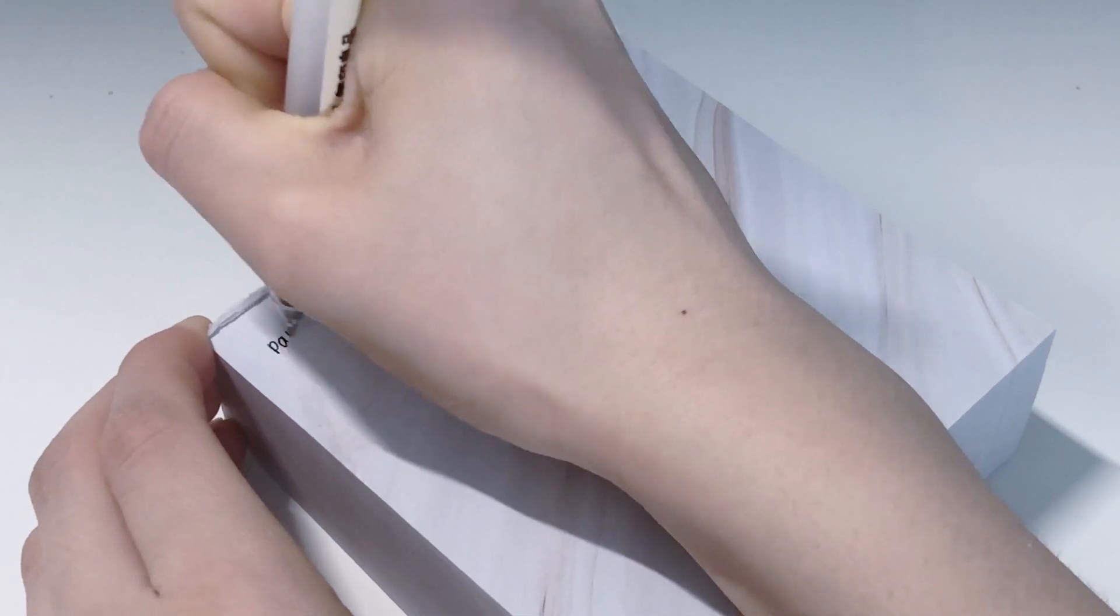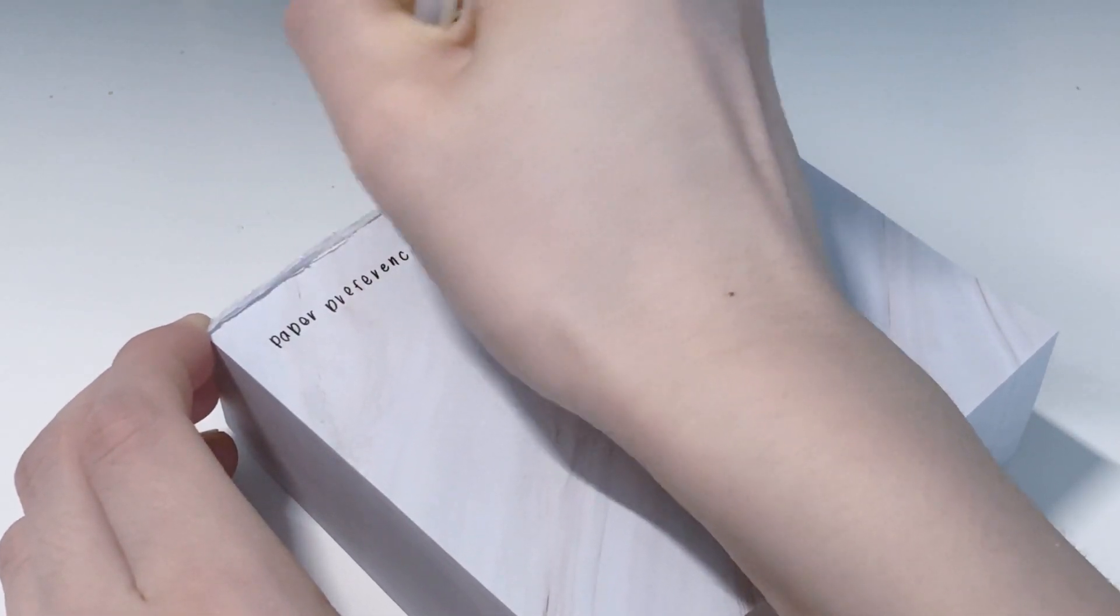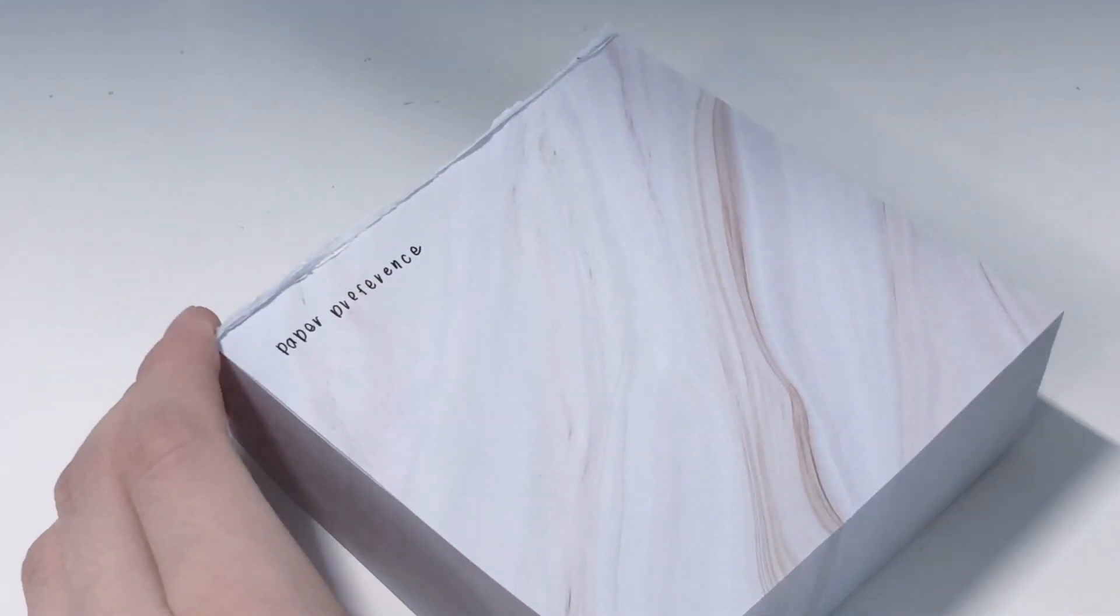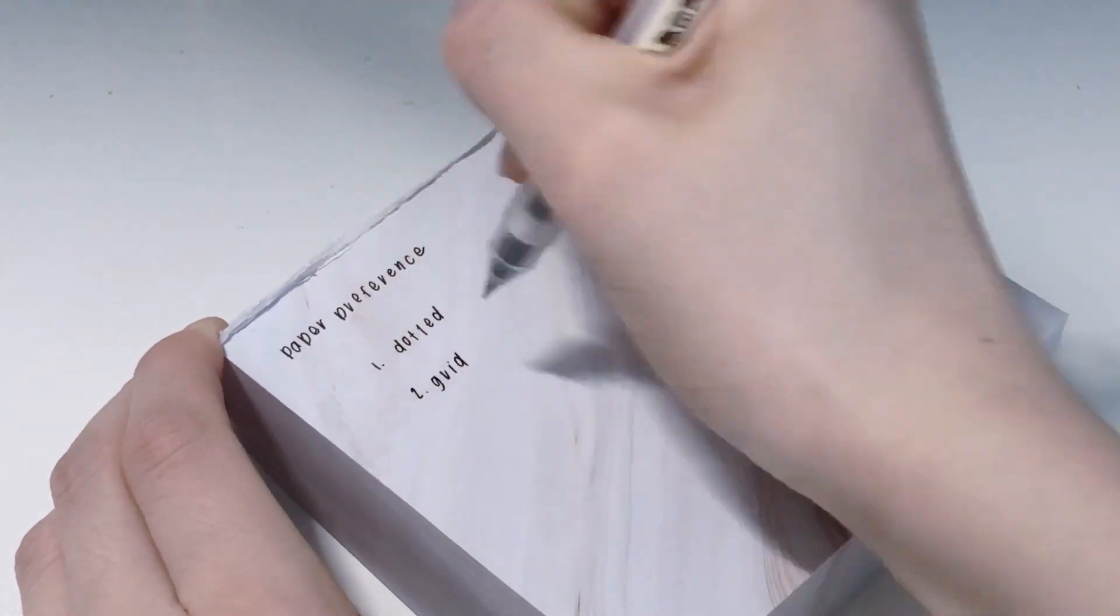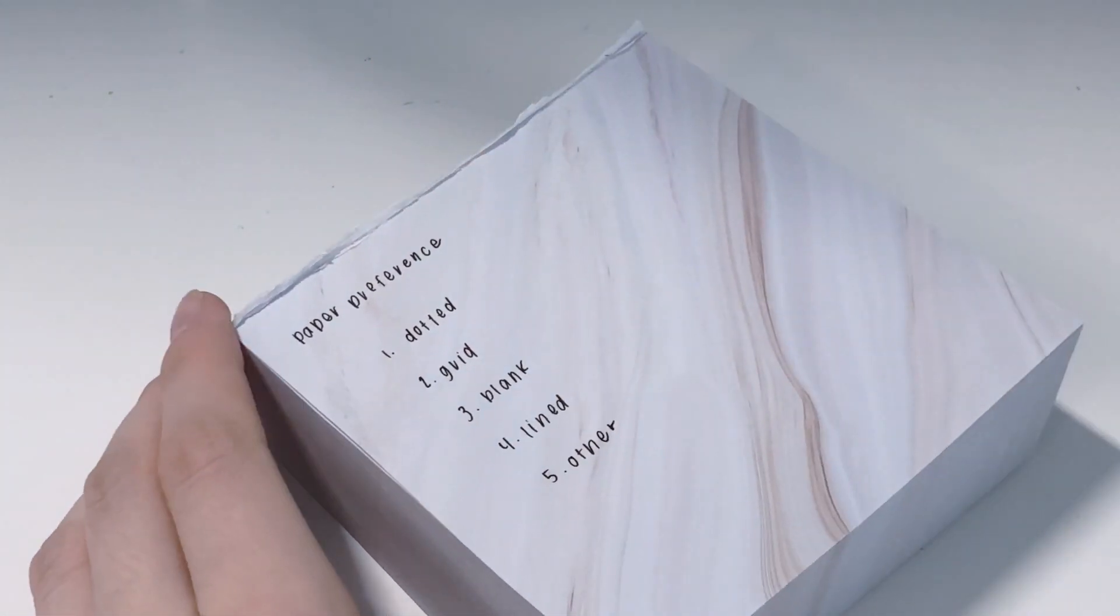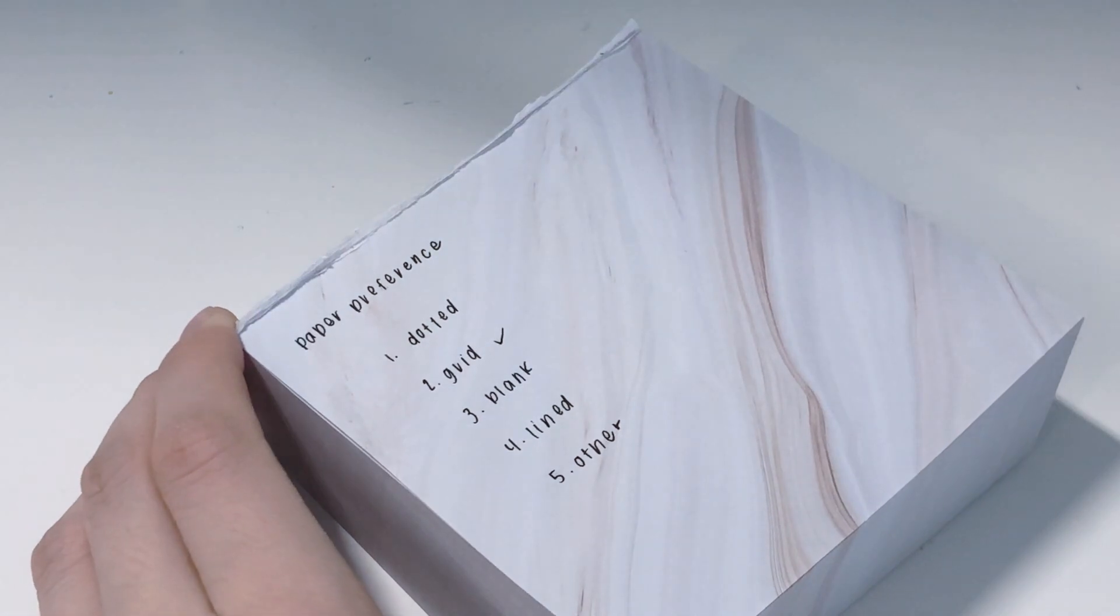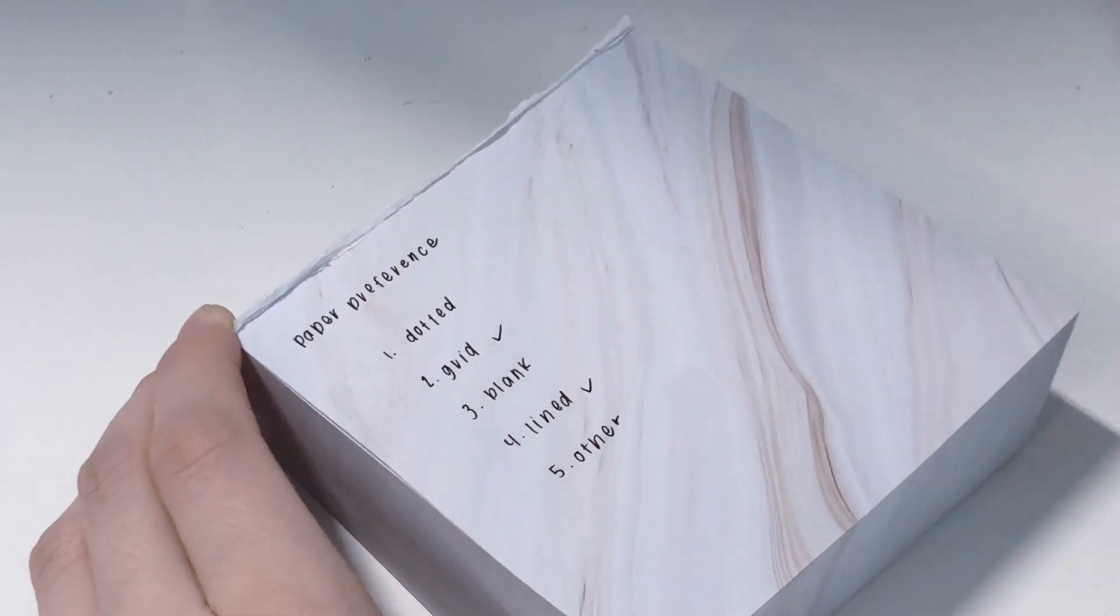And also for the paper, sometimes I do have a preference over it, but once you have your handwriting settled, it really doesn't matter. So I really like grid and lined. I'm not a big fan of dotted because it just makes my handwriting look really messy.